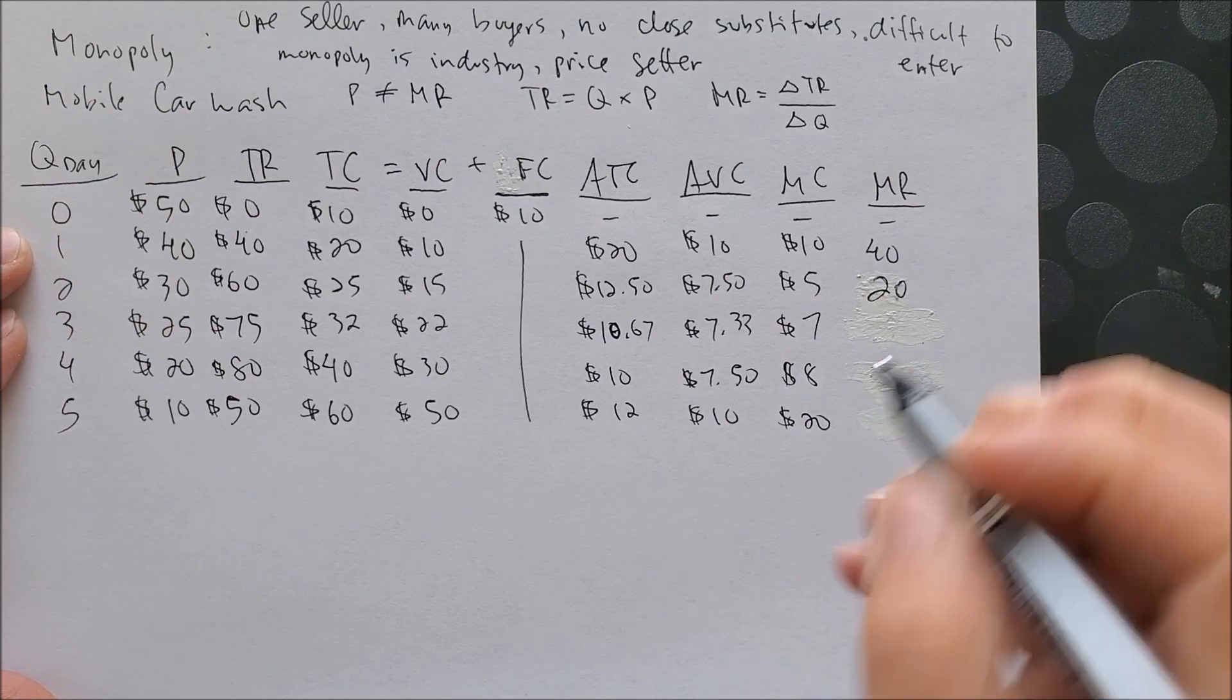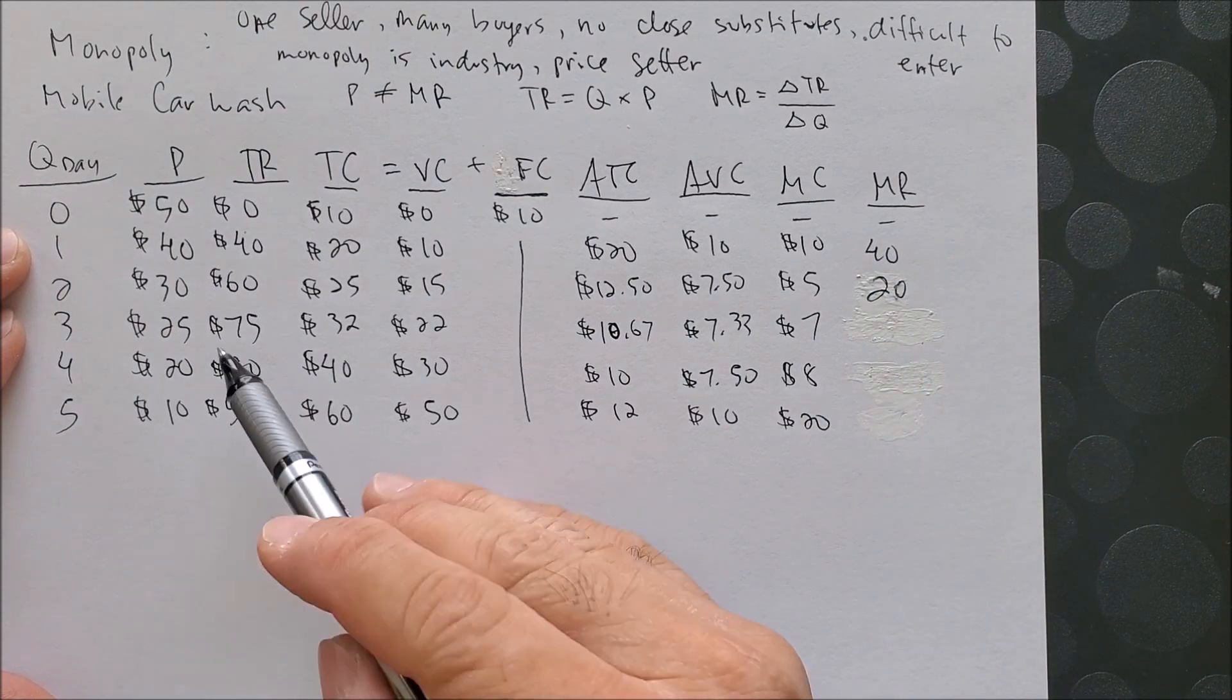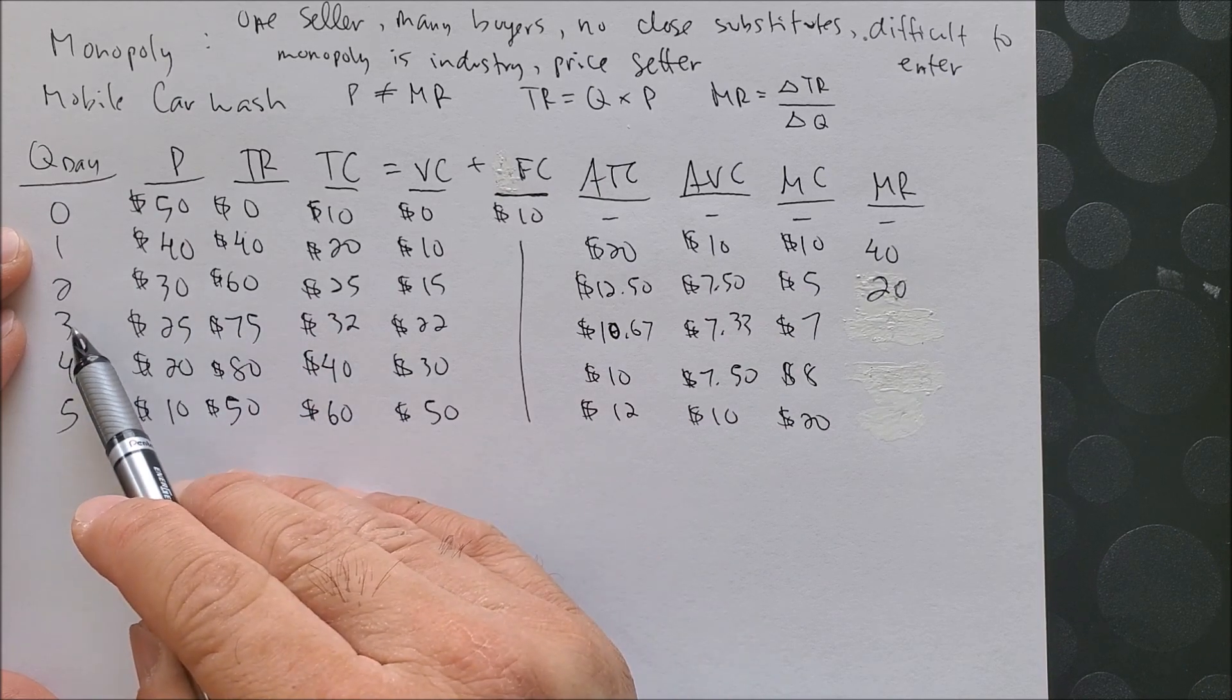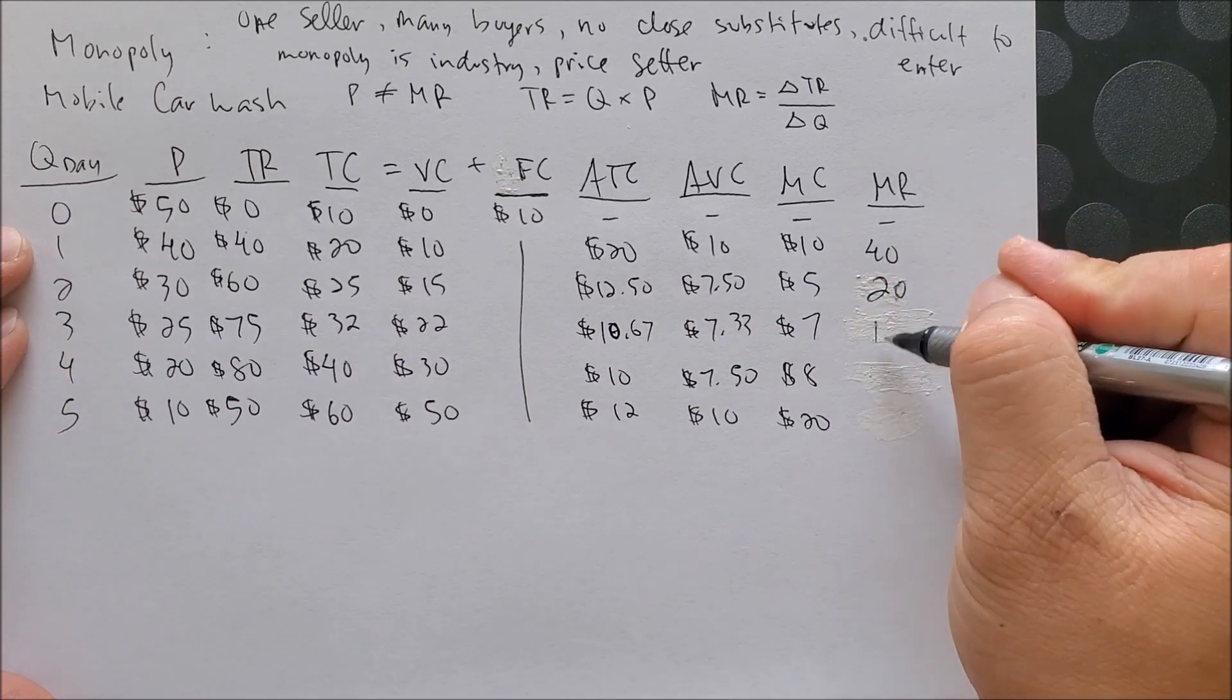From the change of 2 to 3, now we can see 75 minus 60, that's 15, over 3 minus 2, that becomes 15.